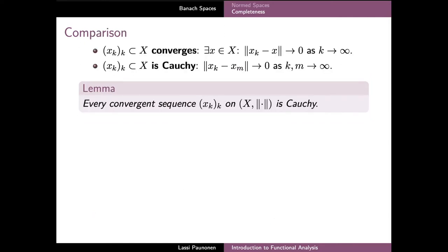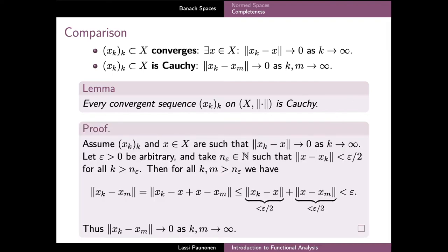At this point we have two convergence properties on a normed space. Of these two, the Cauchy sequence property is strictly weaker in the sense that any convergent sequence is also necessarily a Cauchy sequence. This claim has quite a simple proof: if we begin with a convergent sequence with limit x, and let epsilon be arbitrary, we can by definition find a limit index N(epsilon) such that the norm of the difference between x and xk is less than epsilon over 2.